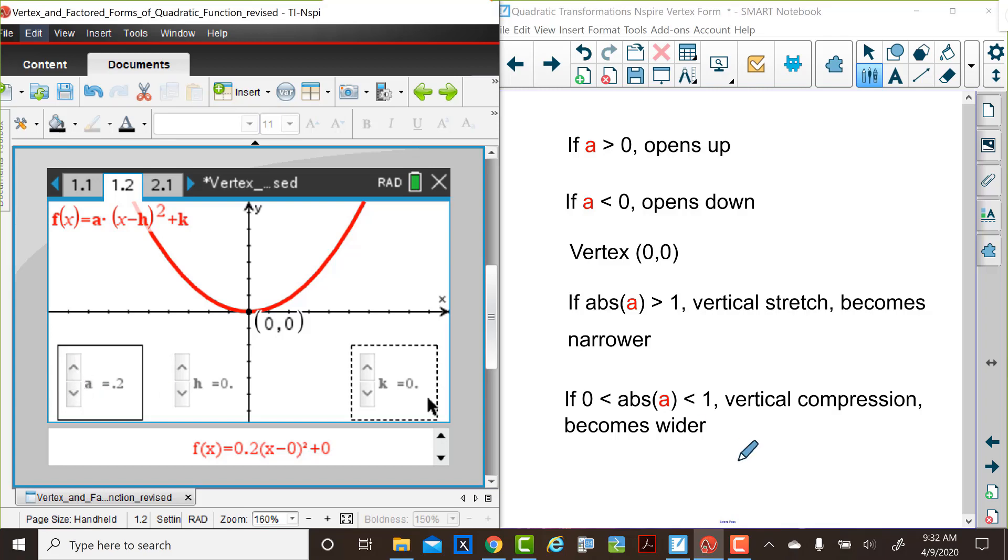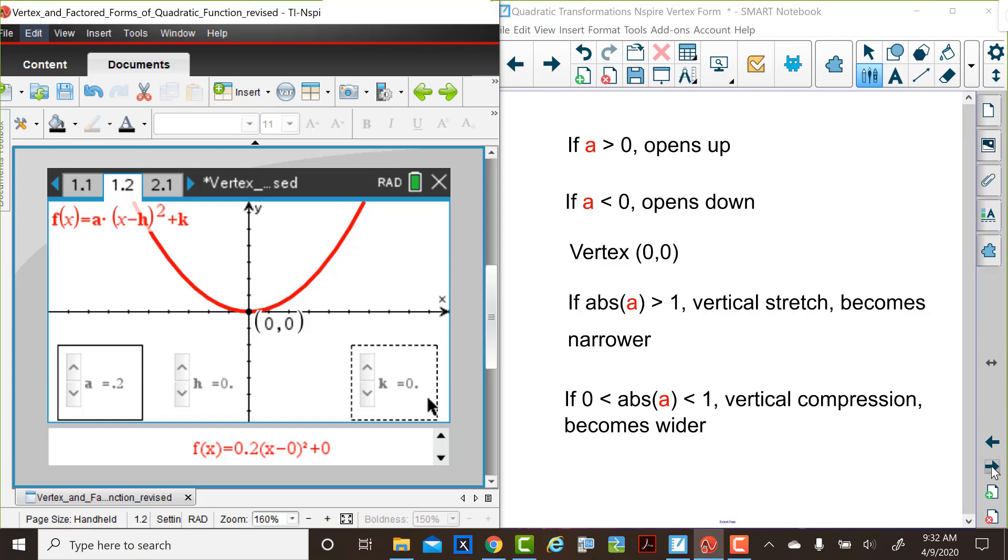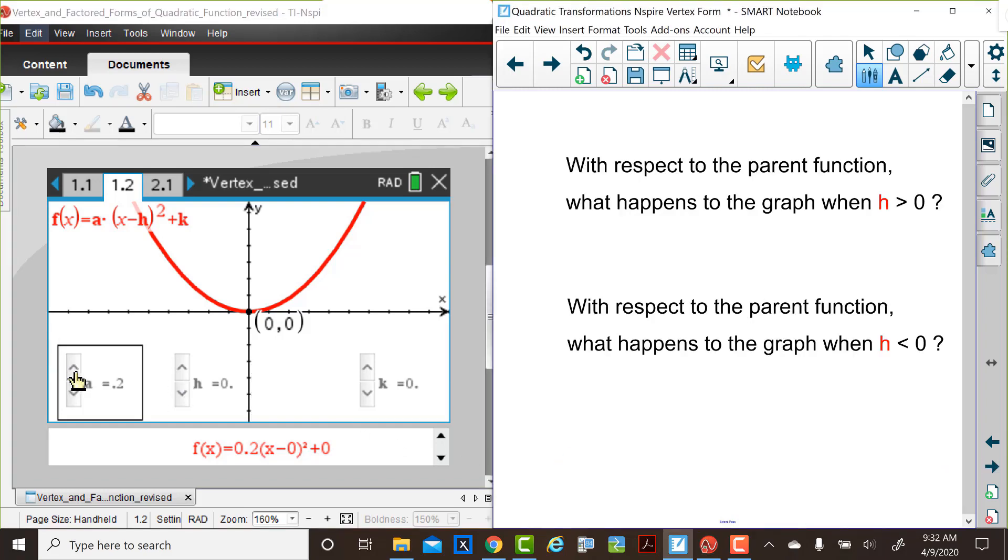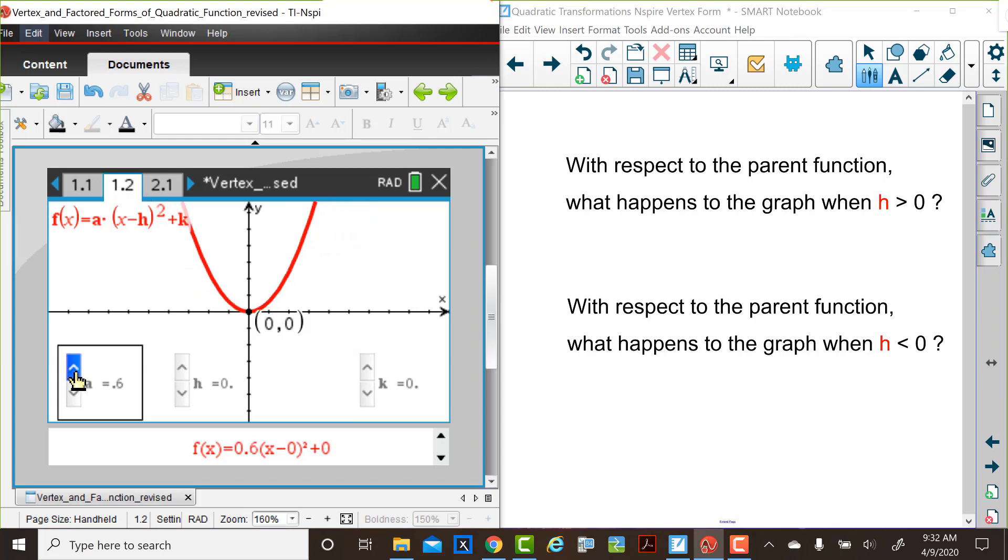So now let's explore what happens with another one of these parameters. We'll reset the value of a back to 1 as it would be for the parent function. And now let's consider what happens to the parent function's graph when h increases.